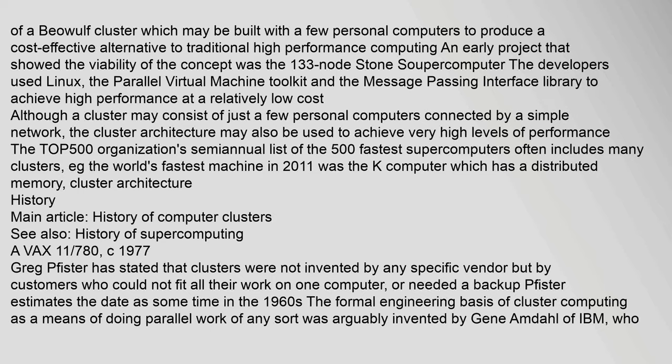An early project that showed the viability of the concept was the 133-node Stone Supercomputer. The developers used Linux, the Parallel Virtual Machine toolkit, and the Message Passing Interface library to achieve high performance at a relatively low cost. The TOP500 organization's semi-annual list of the 500 fastest supercomputers often includes many clusters; for example, the world's fastest machine in 2011 was the K computer, which has a distributed memory cluster architecture.